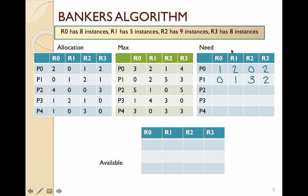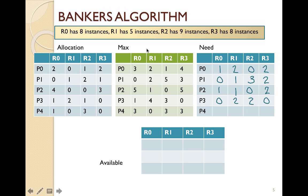Working through the need calculations: P1 has max 0 allocated 0, max 1 allocated 2 giving need 2 (wait, max 2 allocated 2 giving 0), max 5 allocated 2, max 3 allocated 1. P2: 5 minus 4, 1 minus 0, 0 minus 0, 5 minus 3. P3: 1 minus 1, 4 minus 2, 3 minus 1, 0 minus 0. P4: 3 minus 2, 0 minus 0, 3 minus 3 equals 0, and 3 minus 0 equals 3. So the need matrix is now fully calculated.